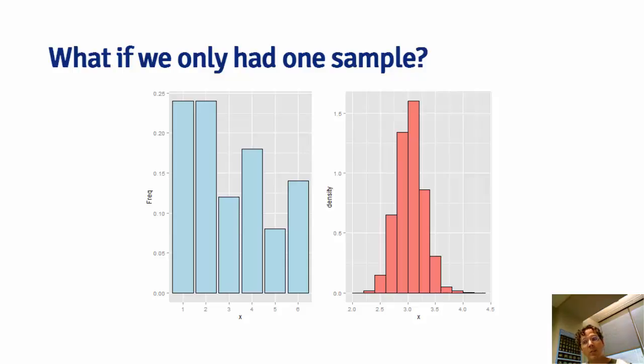So what we have is one sample of size 50. So we only have one average, not a distribution of averages, from whatever the die was that was generating the data.